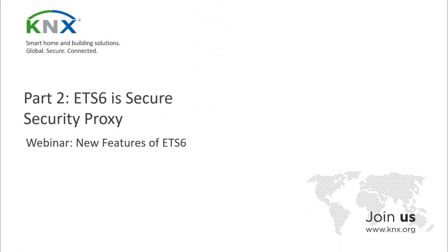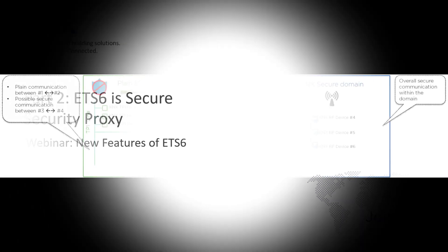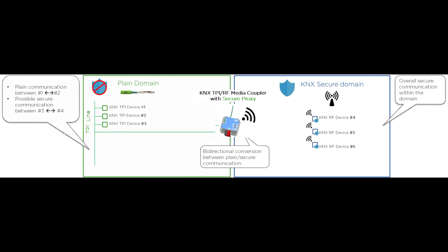The next main system extension supported by ETS 6 is the security proxy. A security proxy is a coupler extension that allows plain devices to communicate with secure devices. This kind of device is a perfect solution when retrofitting existing installations with secure devices without having to remove all the existing plain KNX devices.